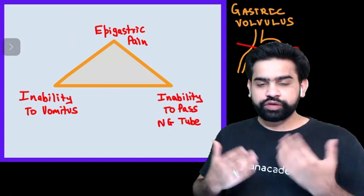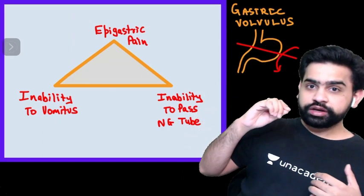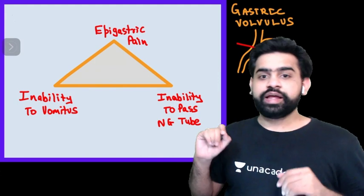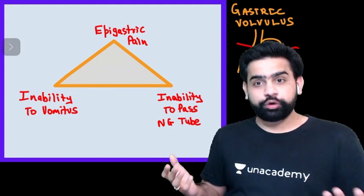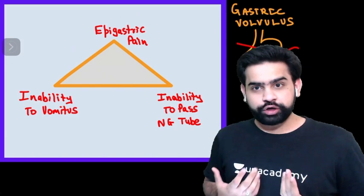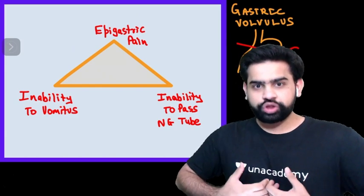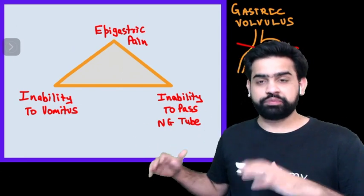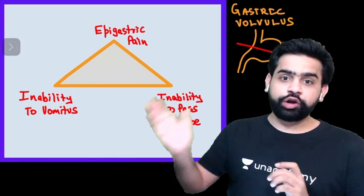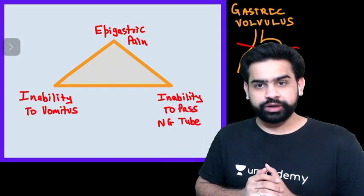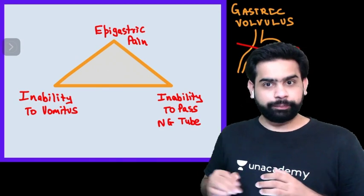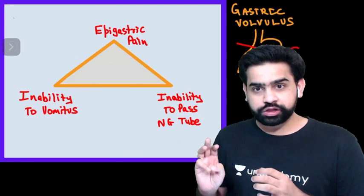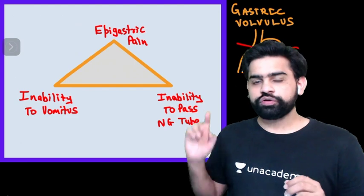The constituents of Borchardt's Triad are: epigastric pain, inability to pass the nasogastric tube — because the stomach has flapped over itself — and inability to vomit. The patient has retching but cannot vomit because the contents beyond the snapped portion of the stomach cannot come through the mouth.